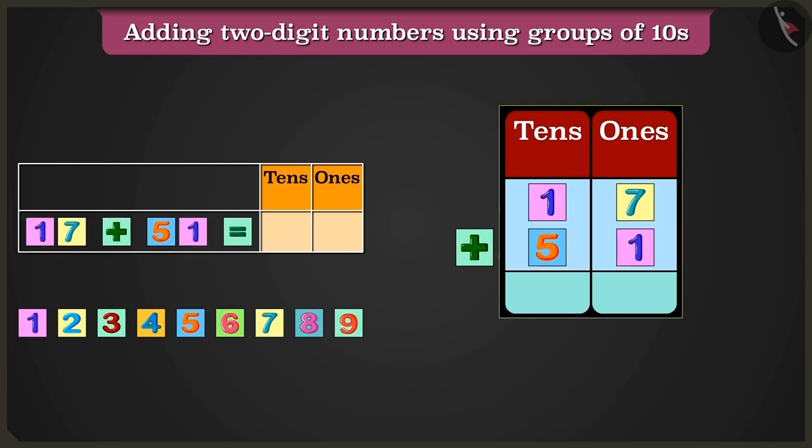First of all, we will add the numbers in the box of ones. So, 7 ones plus 1 one will equal 8 ones. So, we will write 8 in the ones place.